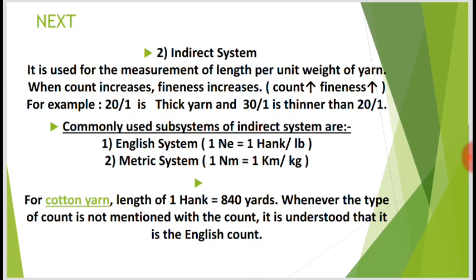Next: the indirect system. It is used for the measurement of length per unit weight of yarn. When count increases, fineness increases. For example, 20s is a thick yarn and 30s is thinner than 20s. Commonly used subsystems of indirect systems are the English system and the metric system. English system: one Ne equals one hank per pound.